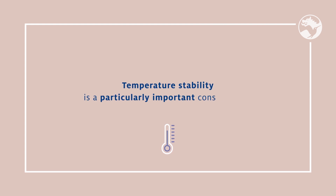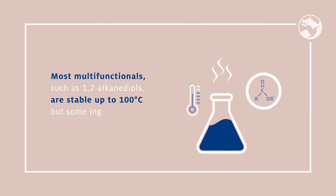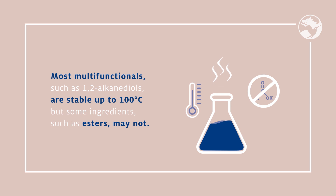One must also ensure the compatibility of the product protection ingredient with certain physical and chemical parameters of the formulation and the formulating and manufacturing process. These include temperature and pH. Product protection ingredients have different stability profiles depending on the chemical classes they belong to. Temperature stability is a particularly important consideration when a hot process is used. While most multifunctionals such as 1,2-alkanediols are stable up to 100°C, some ingredients such as esters may not be recommended for high temperatures. In these cases, if such ingredients must be used, they should be added at a stage past the high-temperature step, like post-emulsification.